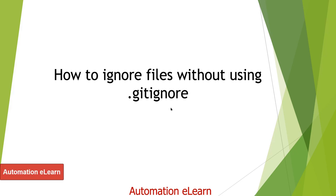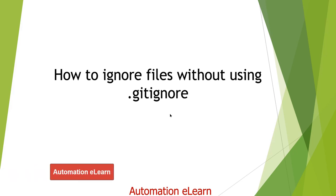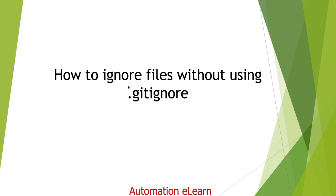Hello guys, welcome back to Automation Elon. In this lecture I'm going to talk about one tricky question related to Git. In one of my previous lectures we discussed how to use the gitignore file in Git, and we discussed everything about gitignore — how to define a set of rules so that Git can ignore those files and folders accordingly.